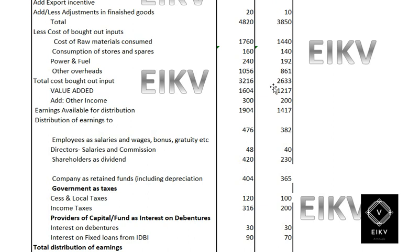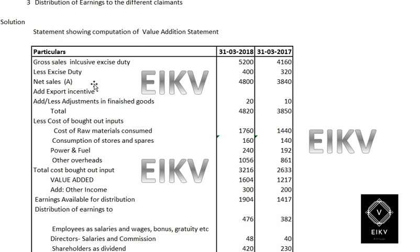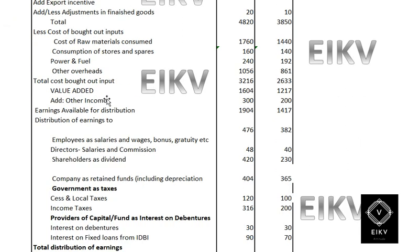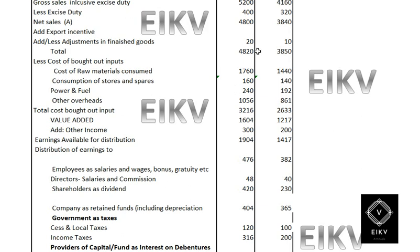After adding these expenses, the total bought-out comes to 3260 and 2633. When we deduct the total bought-out from the earlier total — that is, 4820 minus 3260 — we get the value added. The value added amounts are 1604 and 1270 for 2018 and 2017 respectively.